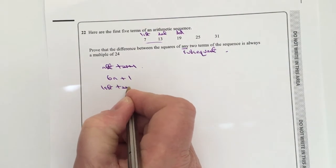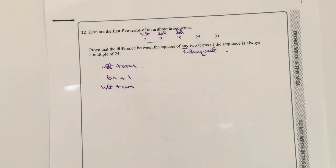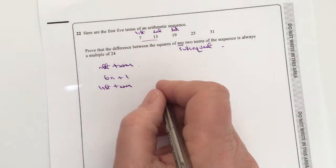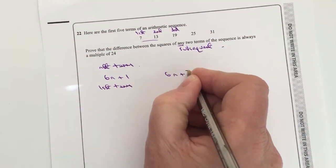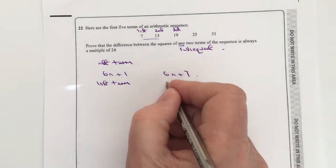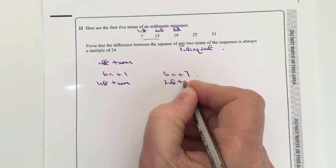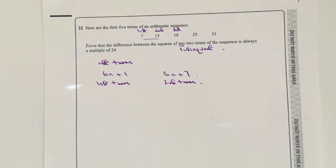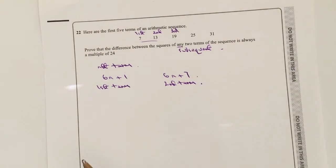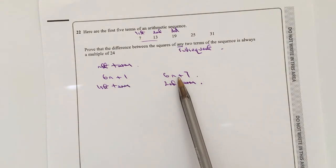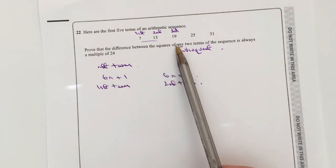So this would be the first term. Okay, but if we're looking at the next or the subsequent term, the one after that, then what I'm going to say is that that would actually be 6n plus 7. So this will be the second term. Okay, so what I'm going to do now is use these two in this particular statement.